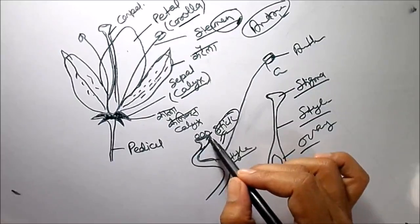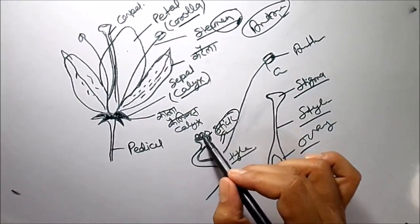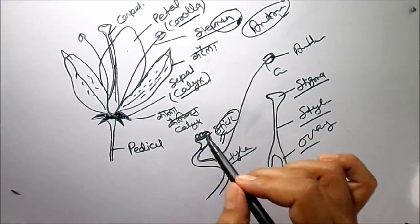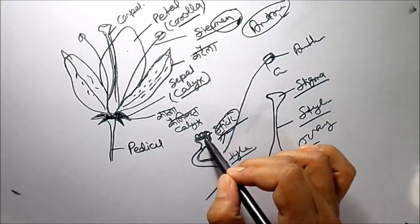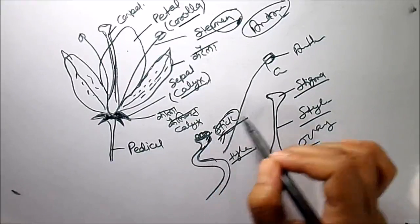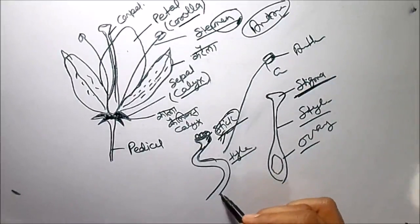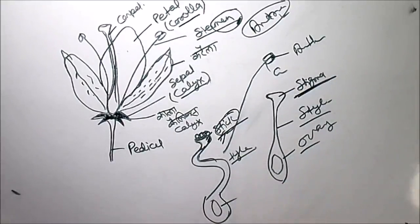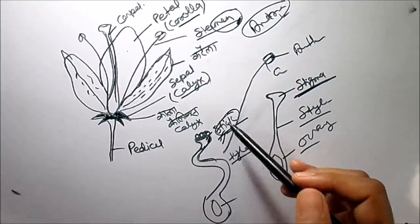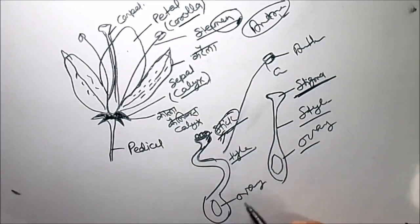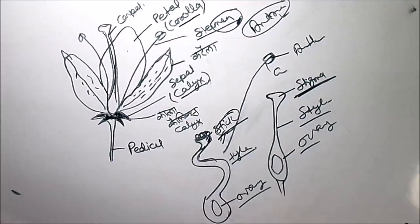Pollen grains come here and because of the sticky substance they stick here, so this is stigma — from 'stick' meaning 'chippa'. S4 for style, stigma for stick, and this is ovary. Here inside the ovary is the ovule. So ovary, style, and stigma are the parts of a carpel. Thank you.